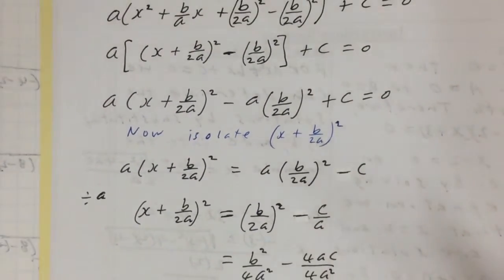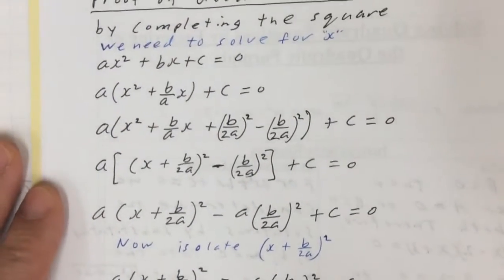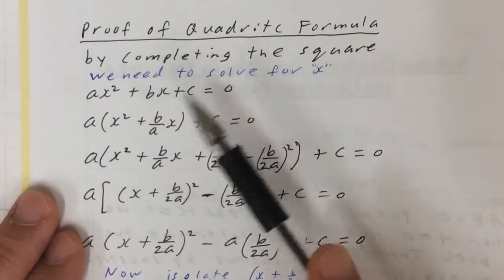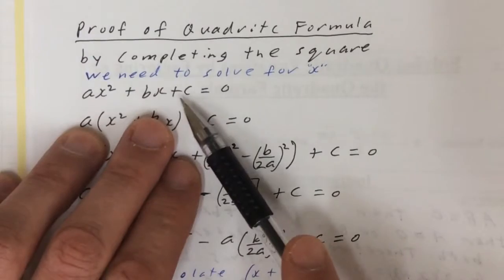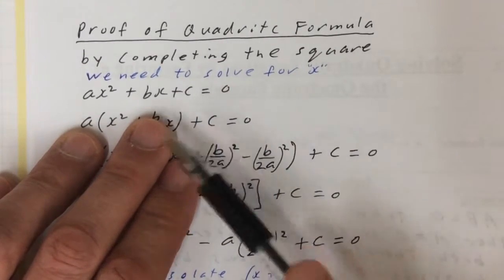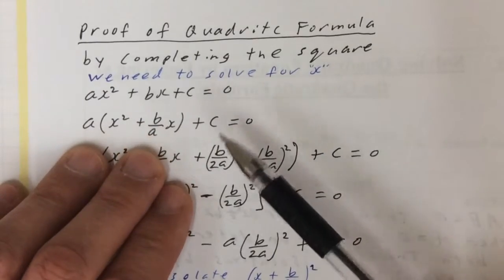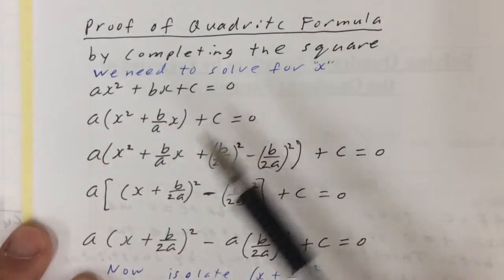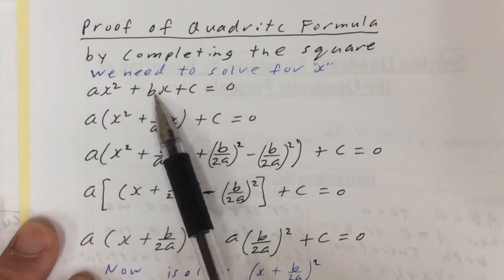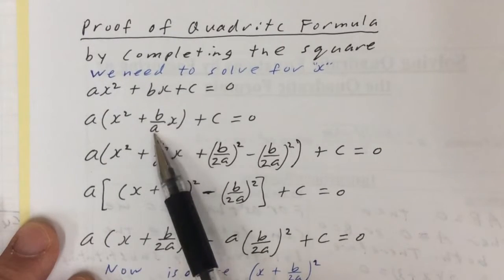If you did that process with a general quadratic. So in this one here, ax squared plus bx plus c equals 0, we want to solve for x. Well, go through the process of completing the square. So first, you're going to factor a to the first two terms. And if you do that, this becomes b over a.